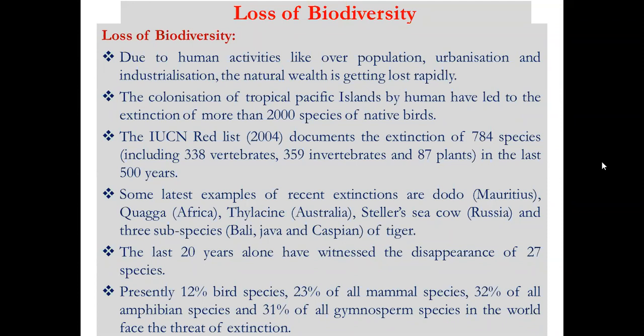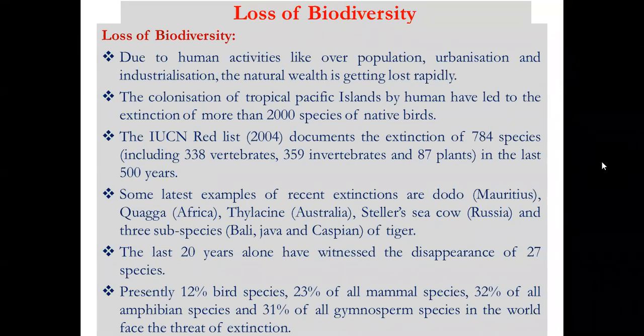Some examples of recent extinctions include the Dodo, a bird species from Mauritius; the Quagga from Africa; the Thylacine from Australia; Steller's sea cow from Russia; and three subspecies of tiger from the Indonesian islands of Bali, Java, and Caspian. These extinctions occurred in the last 100 years.